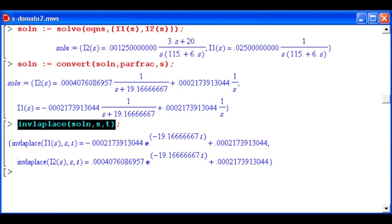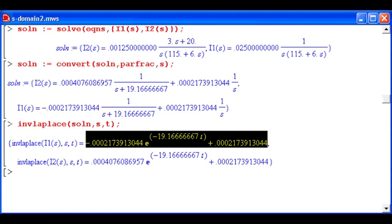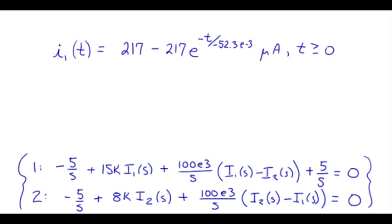Then we'll do the inverse Laplace transform on that result. I1 for T greater than zero looks like that piece. I'm only carrying three significant digits in my answer. I'm also writing it in standard engineering prefix notation, so those currents are in terms of microamps. I've converted that term to the reciprocal of minus 19.166 and so on, so that way this is the time constant. We see that basically says the time constant is on the order of 52 milliseconds.